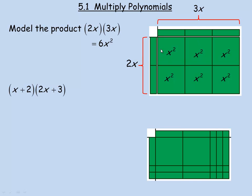So that means that 2x times 3x should be 6x squared. Algebraically, without the algebra tiles, we multiply 2 by 3 to get 6, and x times x is x squared — you actually add the exponents. Remember there's a 1 here and a 1 here; 1 and 1 add to 2, that's how we get x squared.